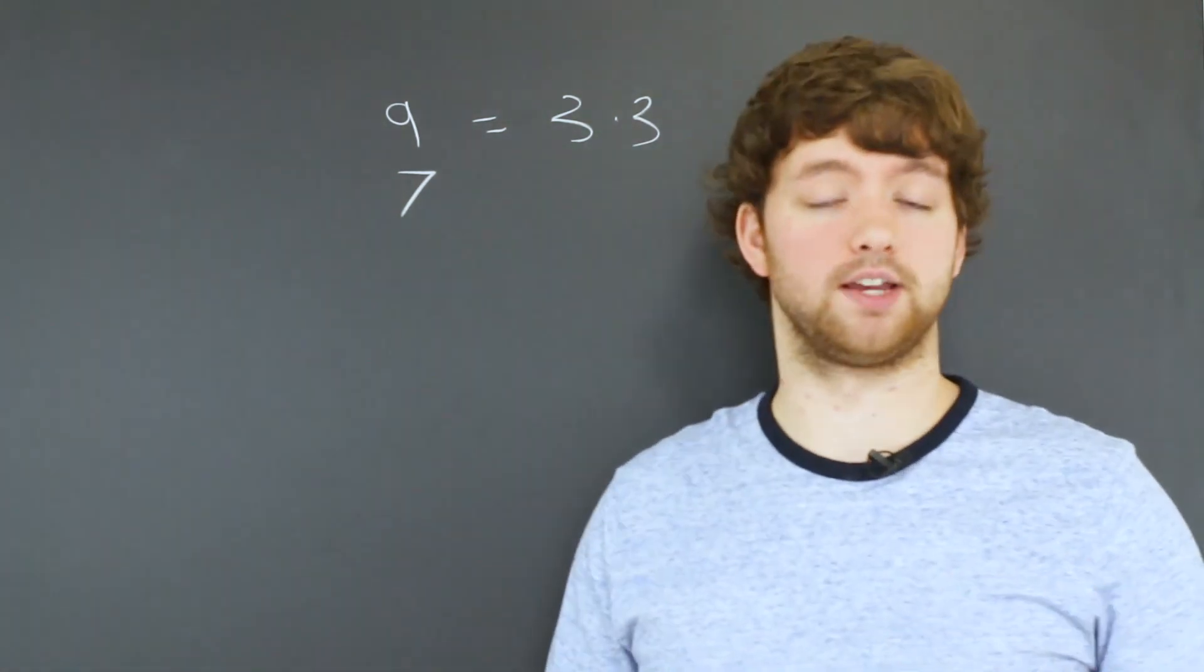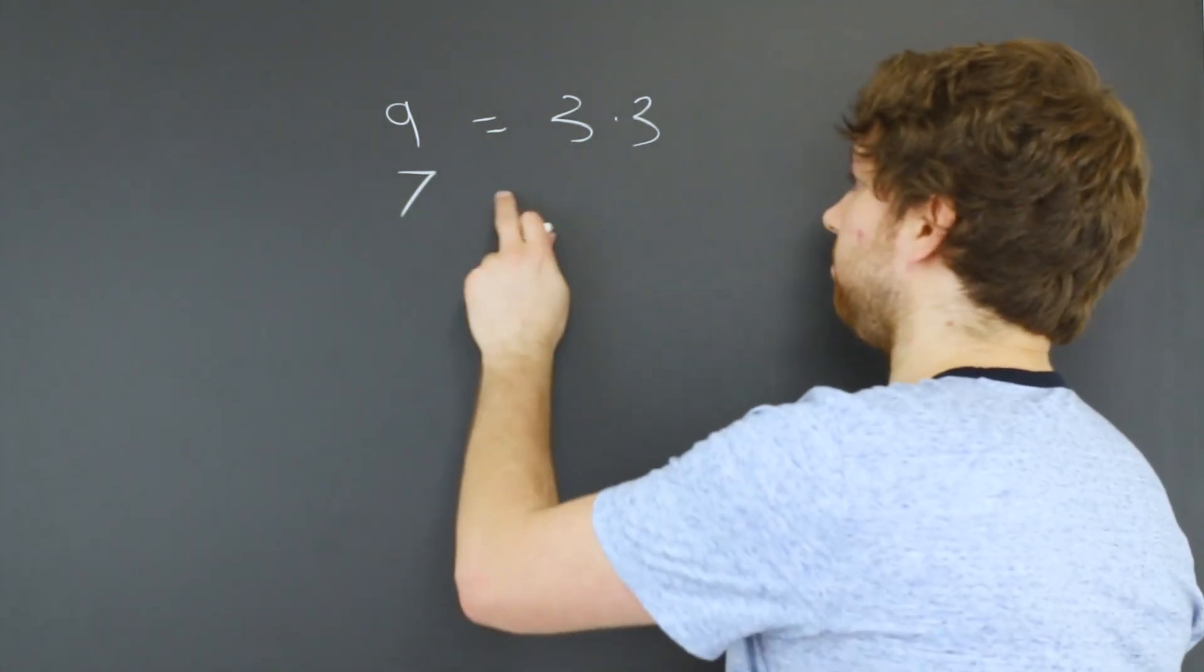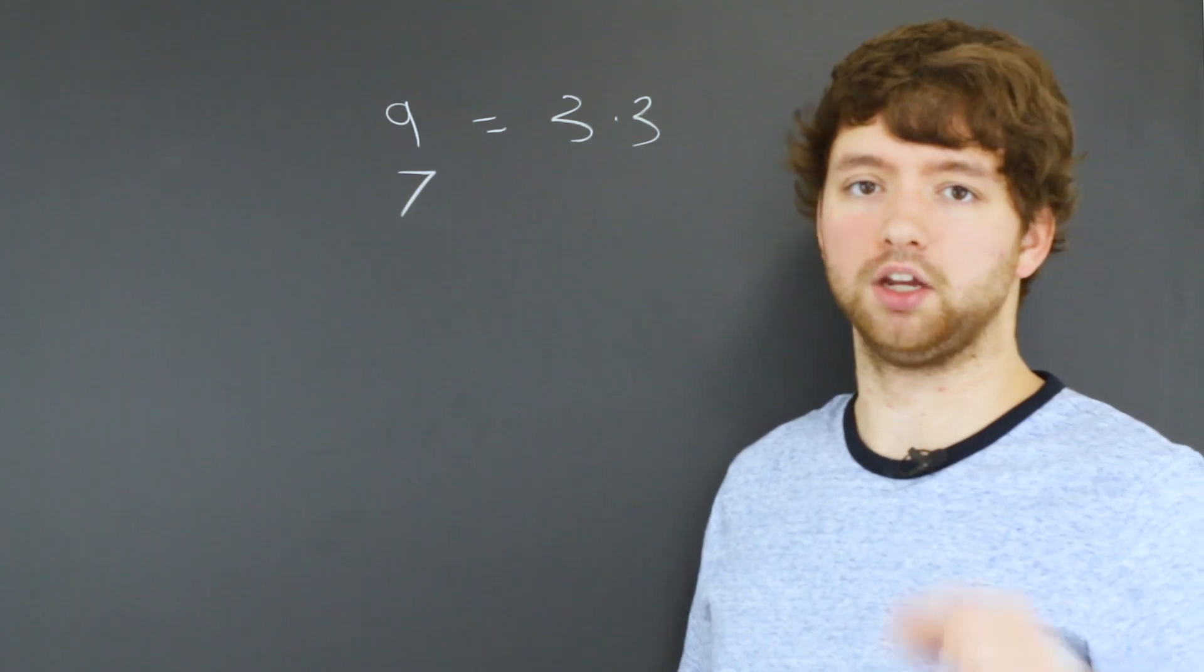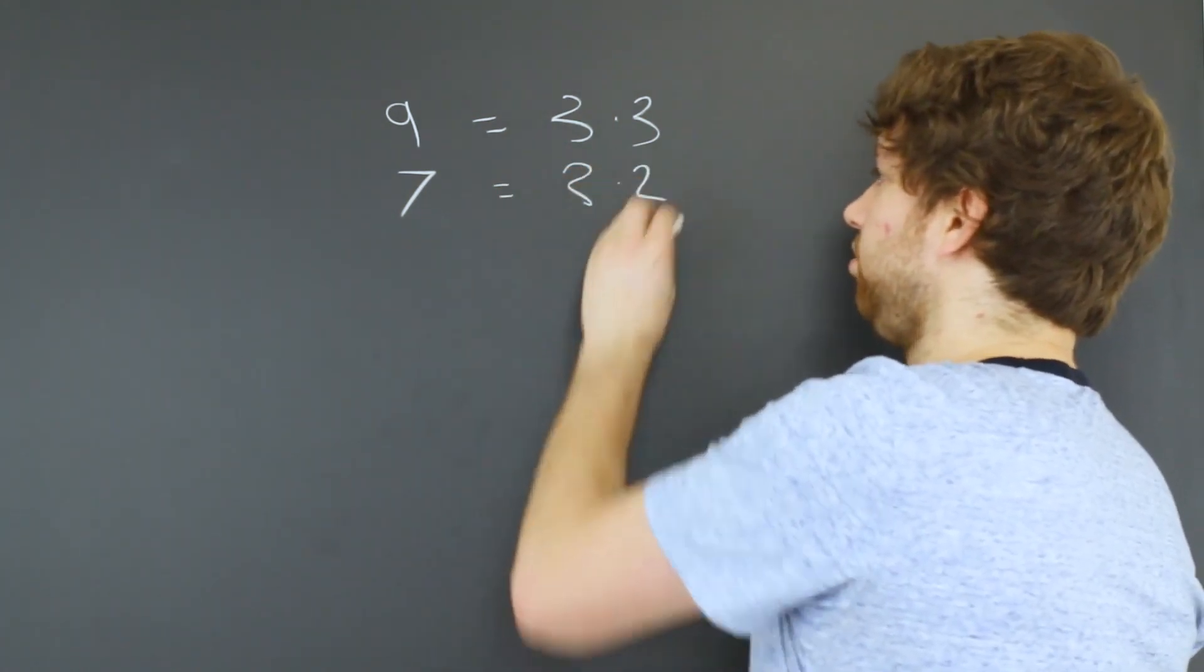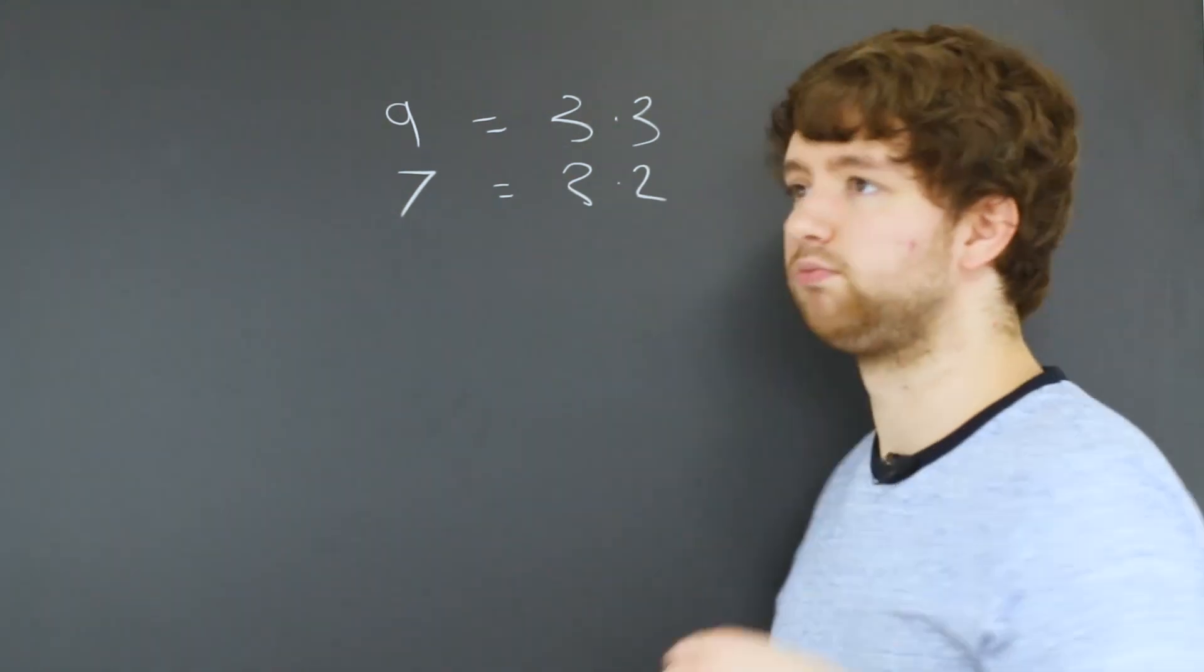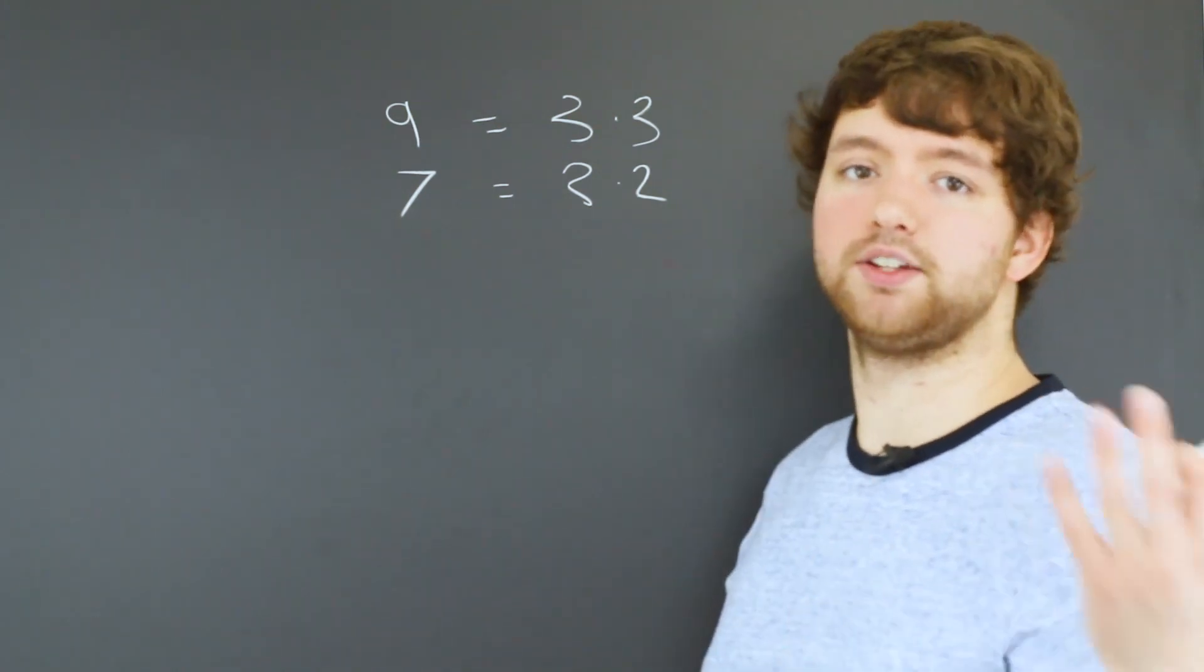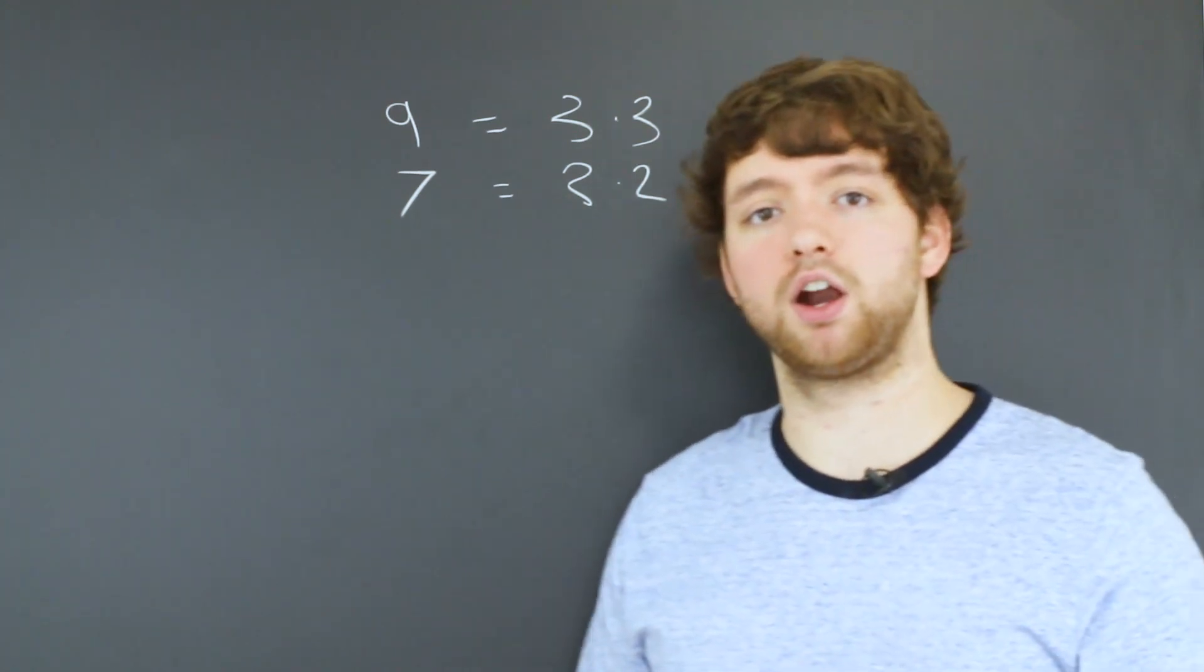For example, you could take seven divided by two and you get three and a half. There's nothing you can multiply to get seven if we're just multiplying whole numbers here. So like you could try three times two, doesn't work, gives you six. You could try three times four, not quite, gives you twelve. So seven is a prime number. Hopefully you guys have a good understanding of what prime numbers are.